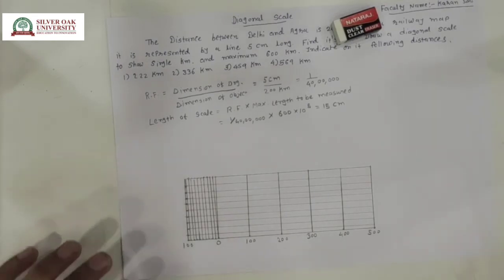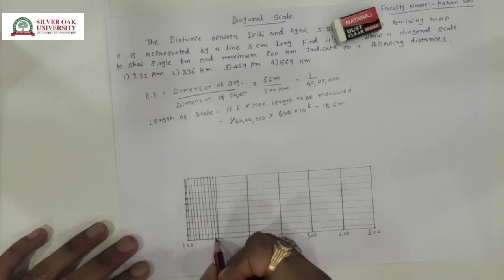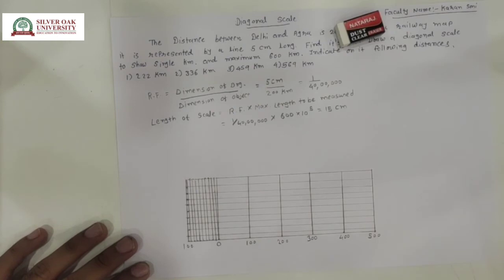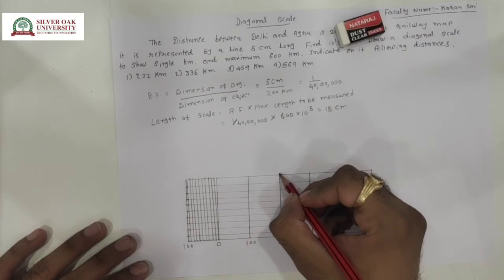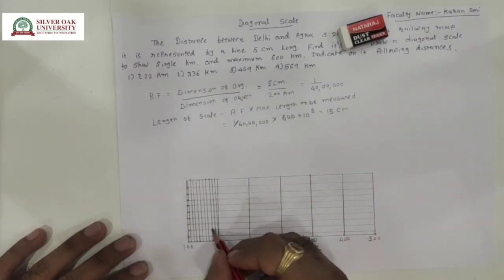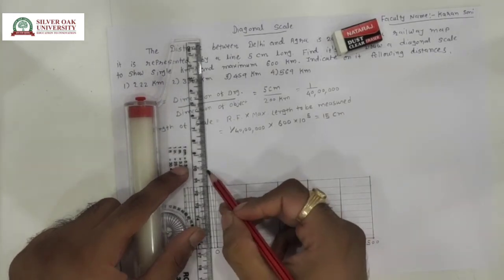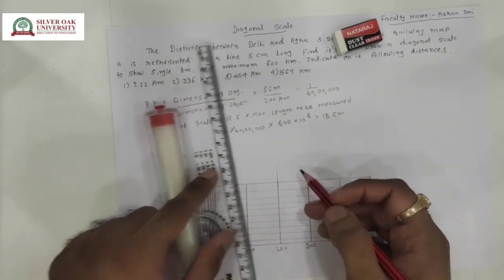Each equal division is now done. The range from 0 to 100 km means each division value is equal to 10 km. We move between each division: 0 to 1, 2, 3, 4, 5 up to 10, representing up to 100 km. Now we have to draw 222 km. For 222 km, this is 200 and then 10, 20, so this is 22. Up to this point we can say that is 222 km, and we draw the diagonal scale from this point to that point — that is 222 km. This is the first answer.